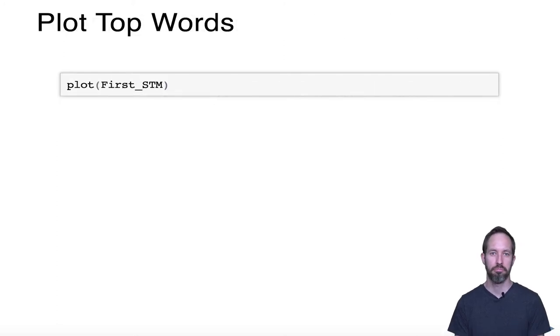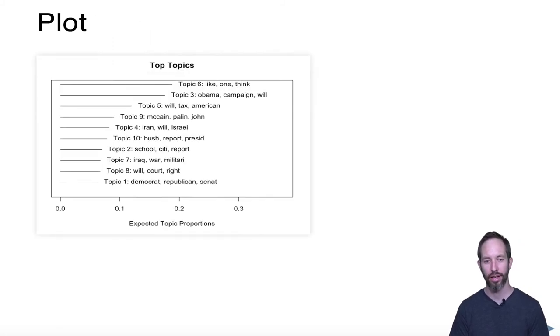Really nice simple function is this plot function in STM. Here we're plotting the results of this model with 10 topics, and here you can see the first topic is not very impressive, like one think, who knows what that is, but at the same time there's clearly topics about the Obama campaign, about the McCain campaign, about taxes, about education, about the Iraq war, and so we can see at the beginning it's doing pretty well. But likely we need far more than 10 topics, just like we needed more than 10 topics in our associated press example.